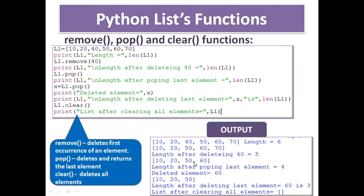The deleted element is 60 — the last element 60 is deleted. After that the remaining list is 10, 20, 50 with length 3. So the length after deleting the last element 60 is 3.